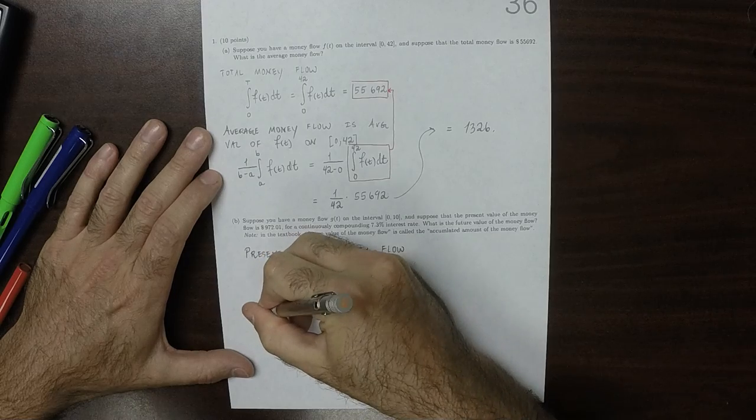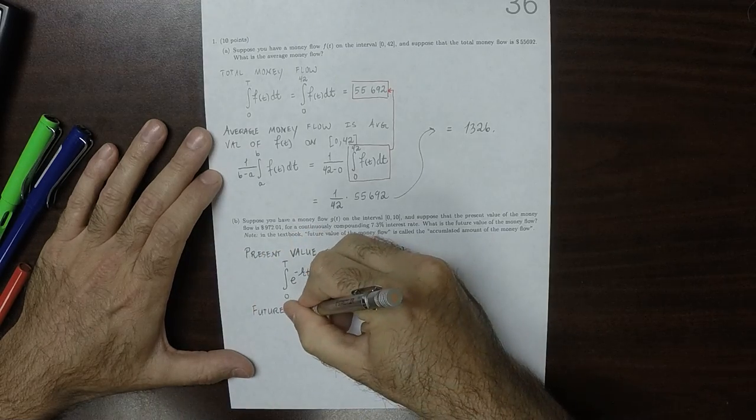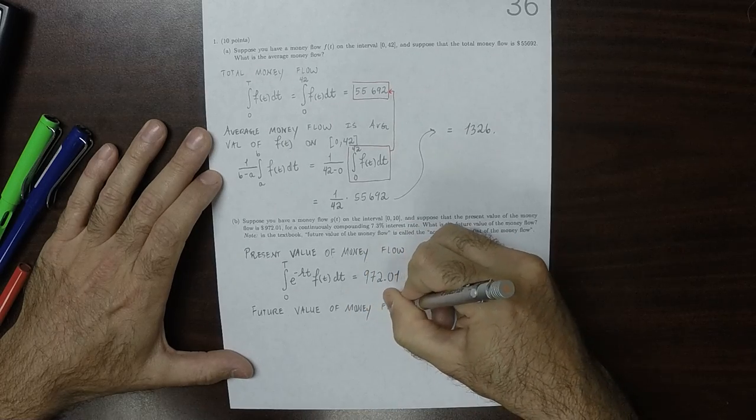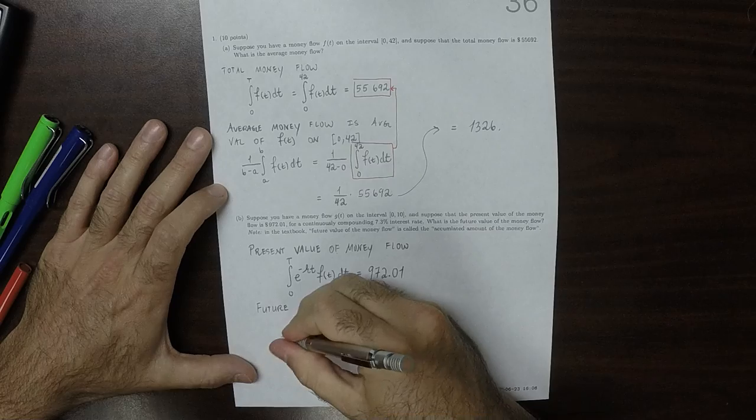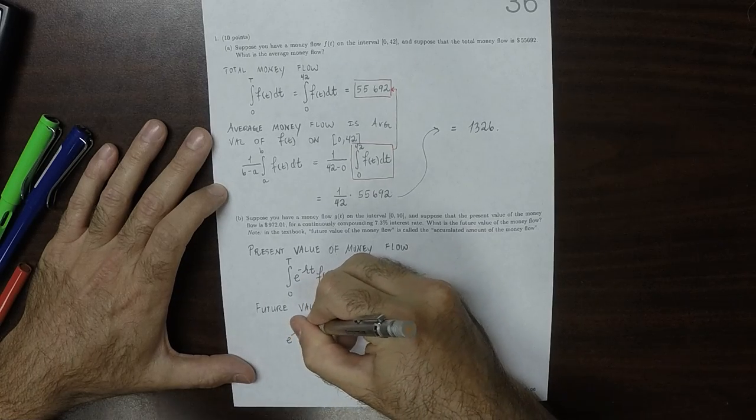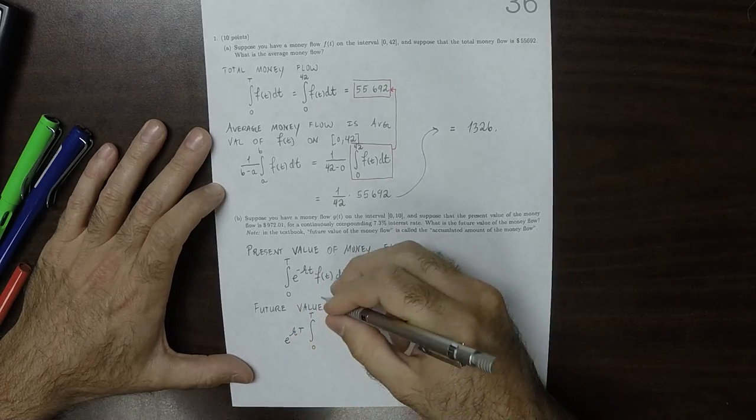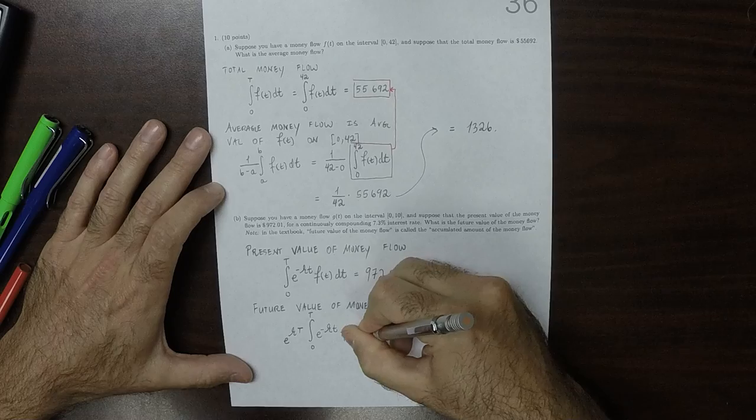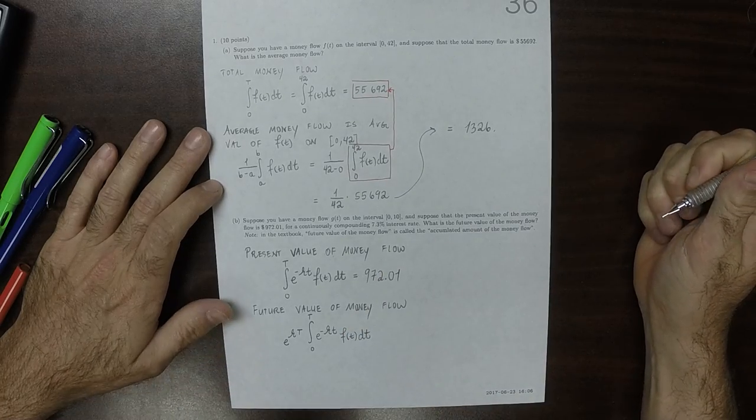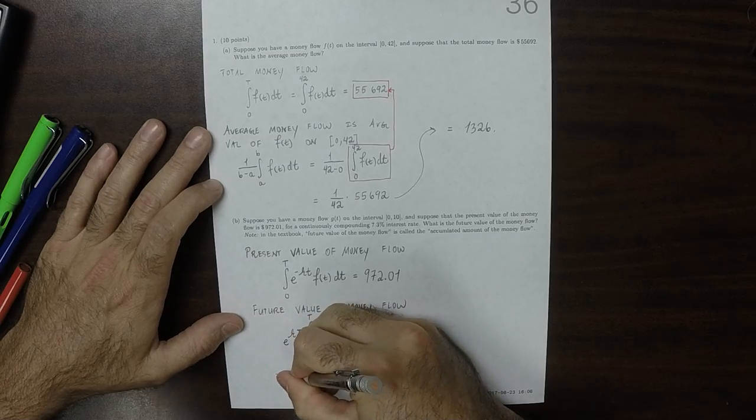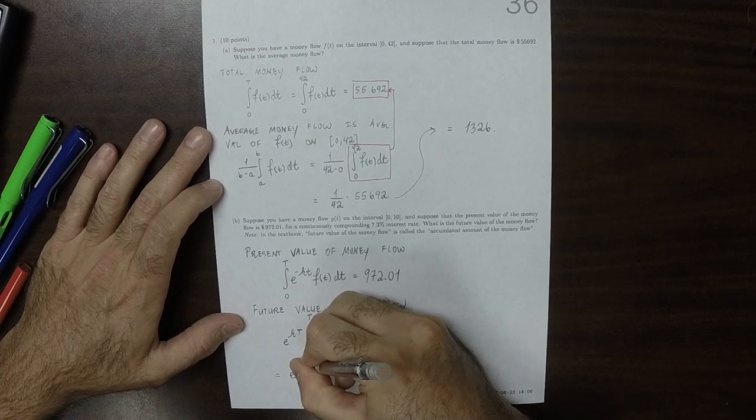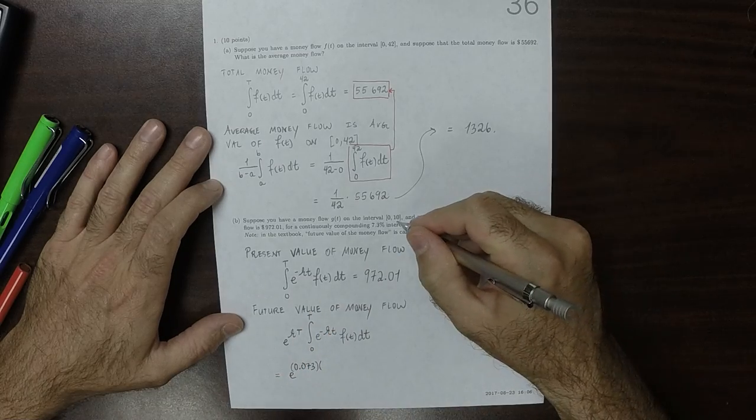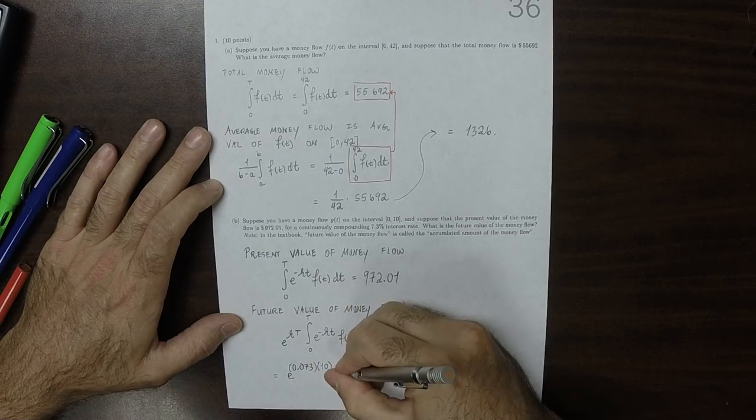And the future value of the money flow is also a formula you need to memorize. So that's exponential R T and then integral 0 to big T, exponential negative R little t, f of little t, d little t. And in this particular exercise, that's exponential of 0.073, because that's the interest rate, and then multiplied by 10, because that's big T, and then multiplied by that number, 972.01.